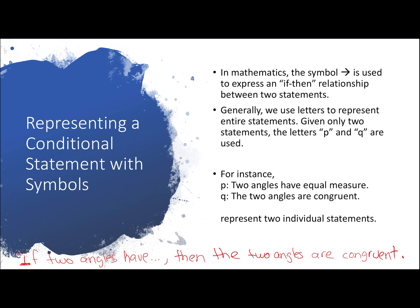That's a lot to write each time, so we have symbols to represent each statement. Since statement P represents 'two angles have equal measure' and Q represents 'two angles are congruent,' we can write the if-then statement as P arrow Q, which means 'if statement P, then statement Q.'